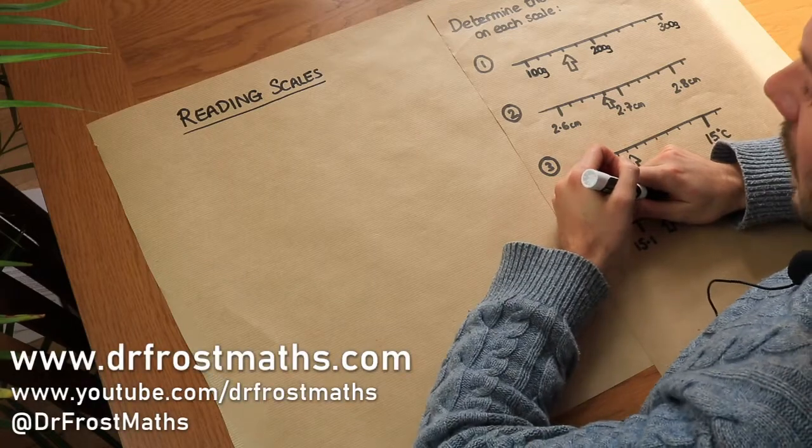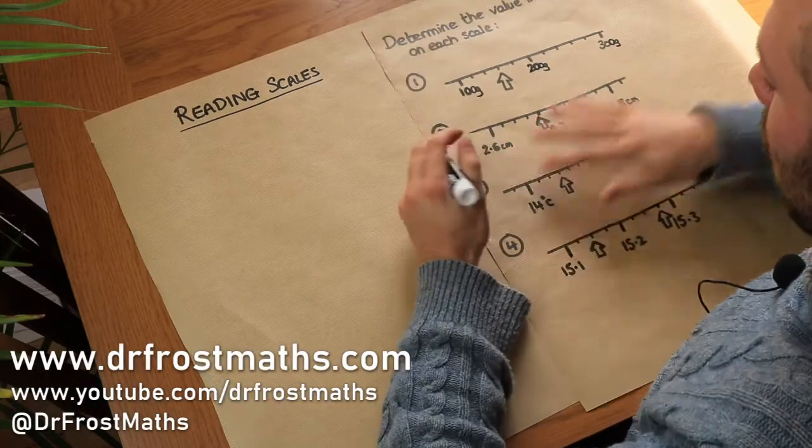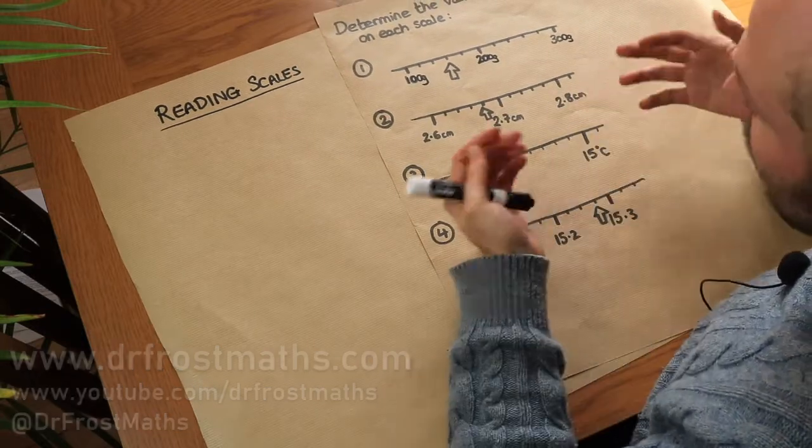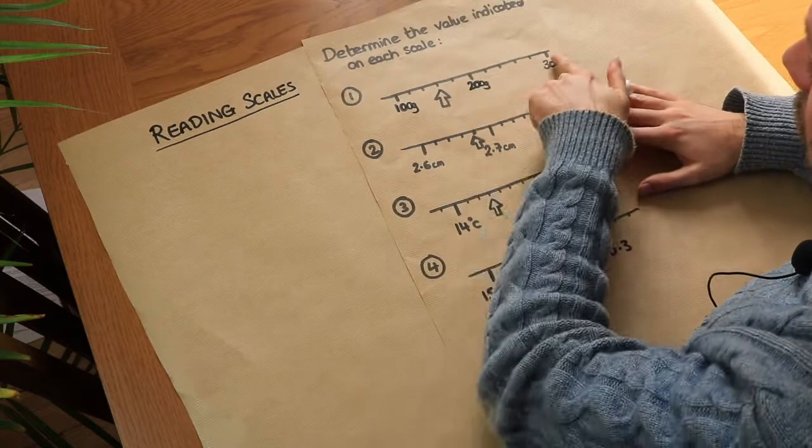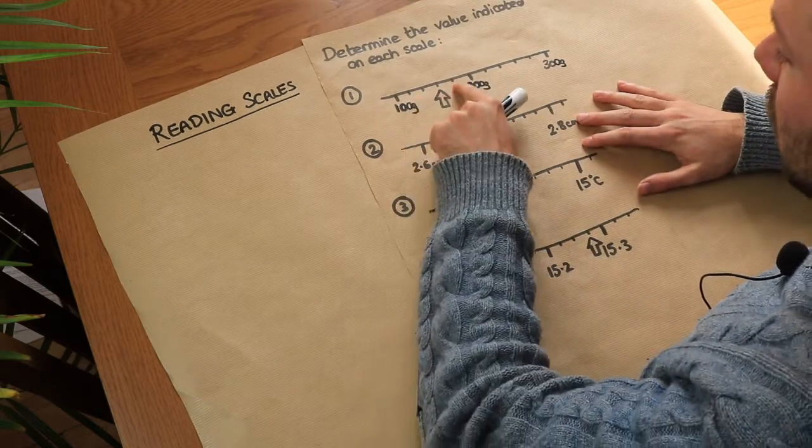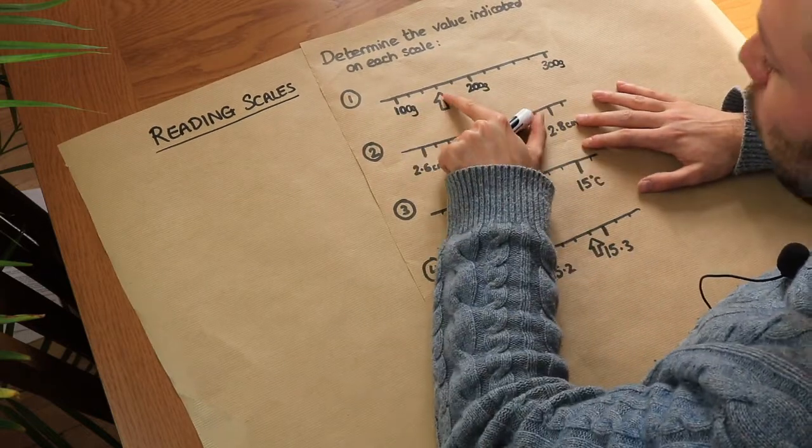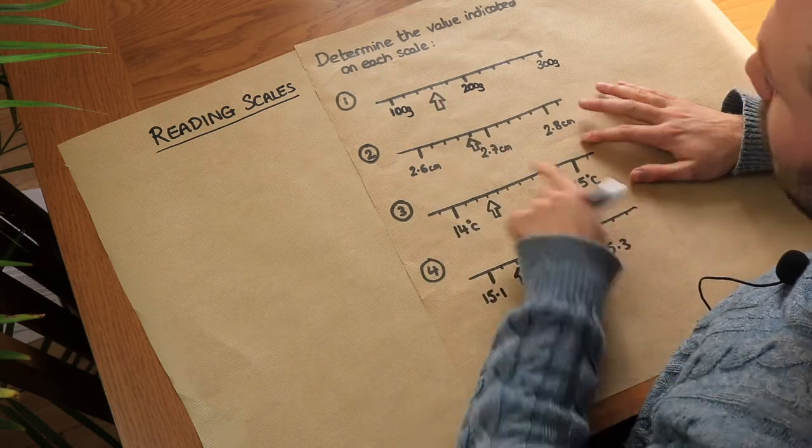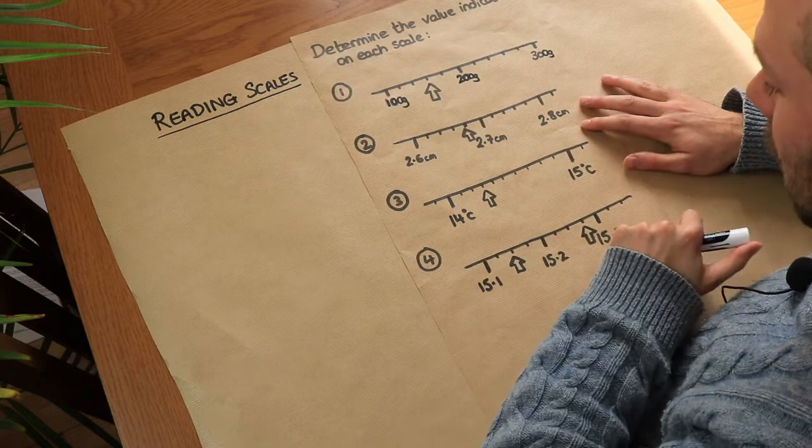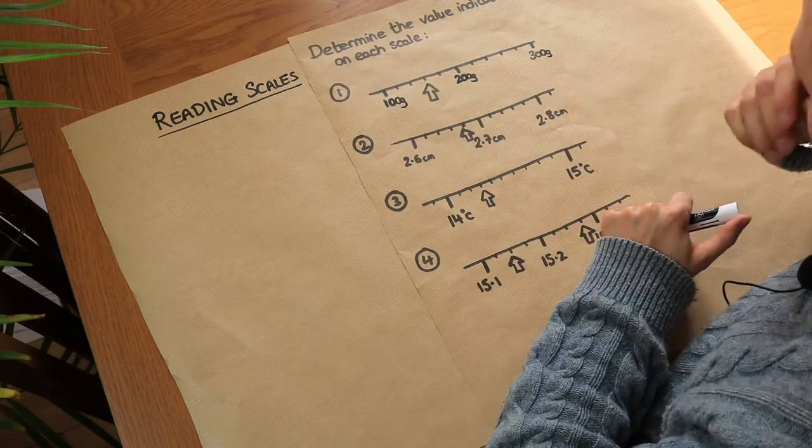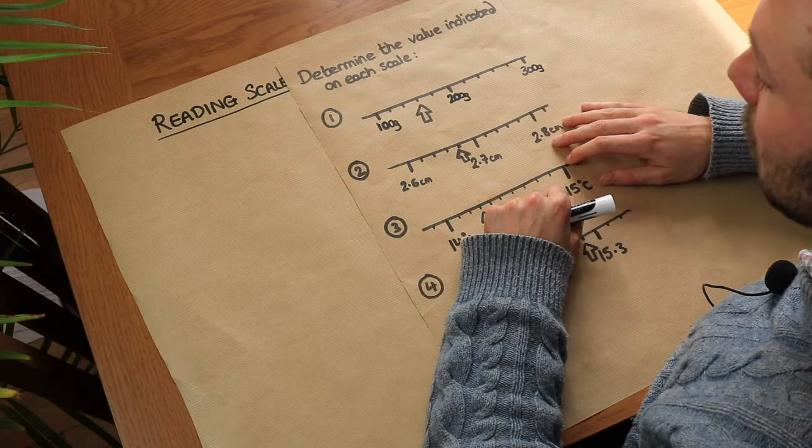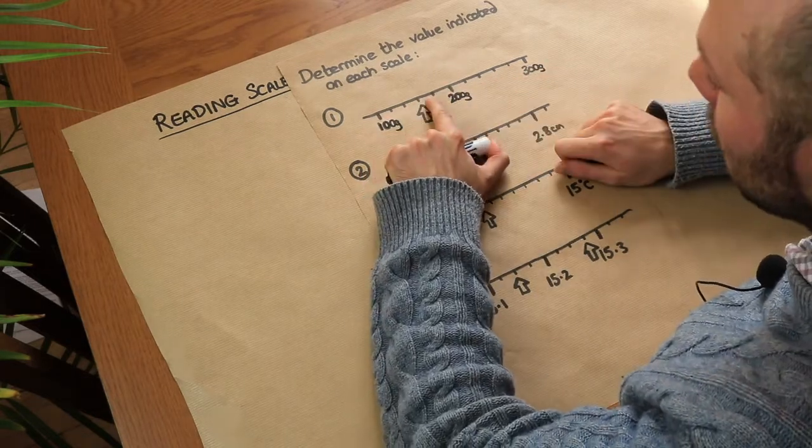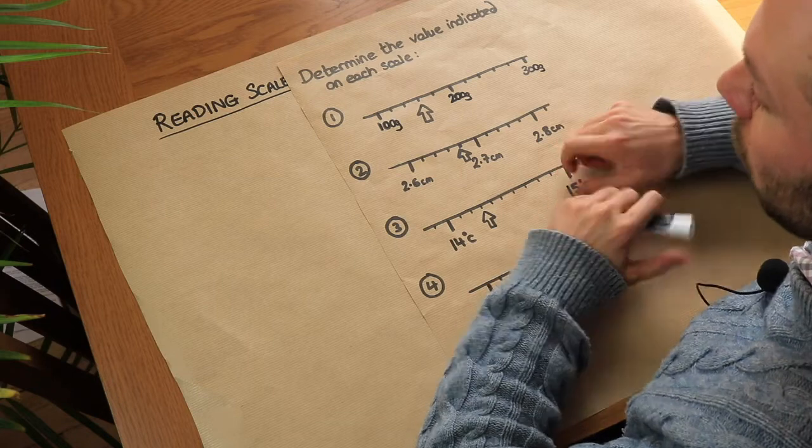Hello and welcome to this video on reading scales. By a scale I mean that we might be reading off a thermometer or we might be reading off a weighing scale where we have some kind of number line divided into parts. We have to say what is that weight, length, or temperature indicated by this mark here. The key is just thinking how is the scale split up. What is each one of these parts worth on the scale?